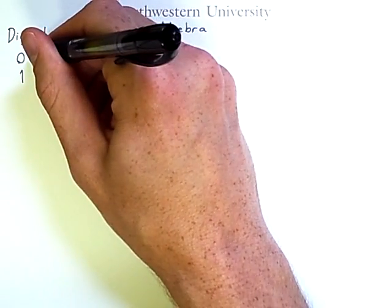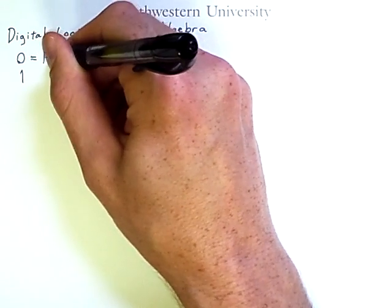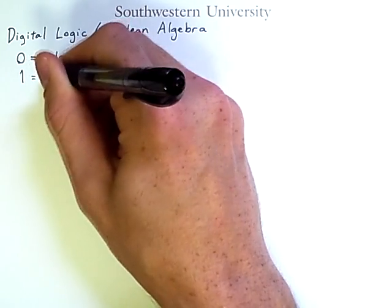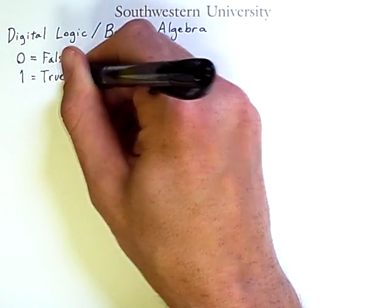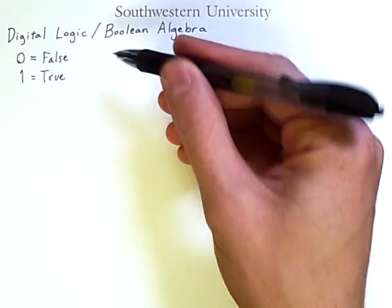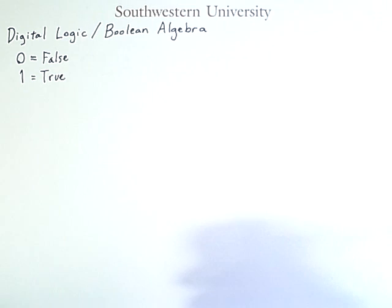Now, it is common to interpret these symbols as being false and true, and there are certainly applications of this sort of logic if you use these interpretations. But ultimately, these are just symbols, and the operations that you use will be the same regardless of what symbols you use.